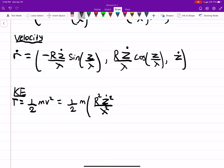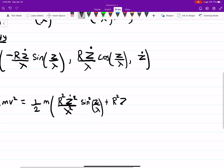Sine squared z over lambda plus R squared z dot squared over lambda squared cosine squared z over lambda plus just z dot squared. So I just squared the velocities.